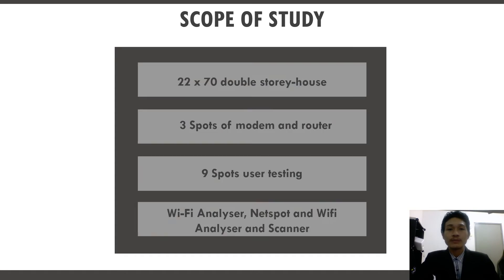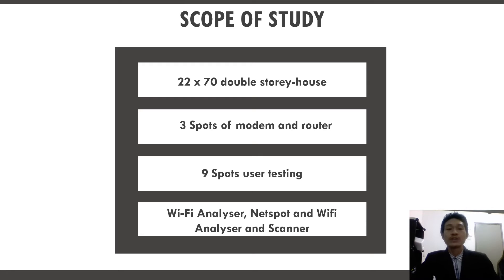The scope of the project covers a 22 by 70 feet double-story house with 3 spots of modem and router placement — Condition A, Condition B, and Condition C — 9 spots of user testing, and 3 software tools used: Wi-Fi Analyzer app, NetSpot, and Wi-Fi Analyzer and Scanner.